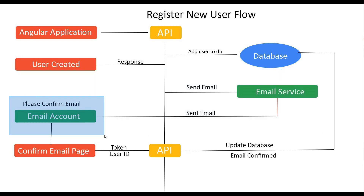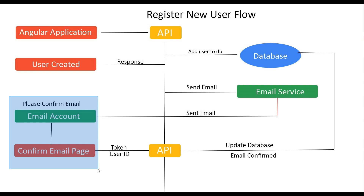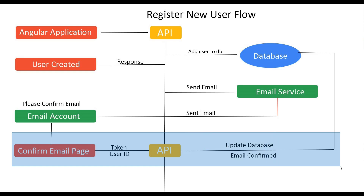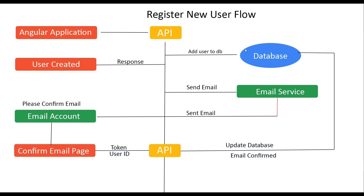In the email, they have a token and the user ID. So when the user clicks on this link in their email, we're going to send them to the Angular application. The Angular application is going to send the token and the user ID to a new API. We'll be working inside the API in this video, and then we'll actually update the database and confirm the user's email. At the end of the video, we'll check the database and make sure the user's email is confirmed.